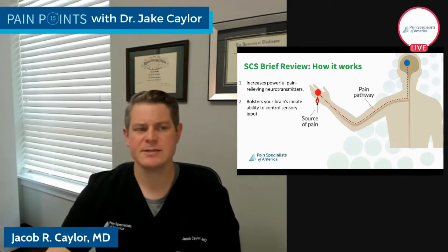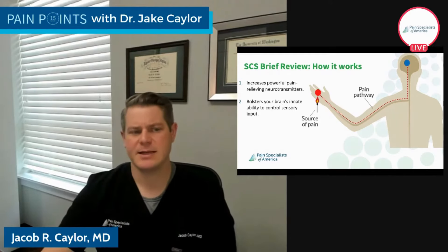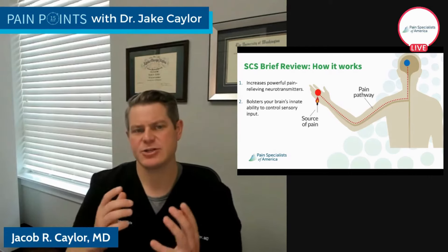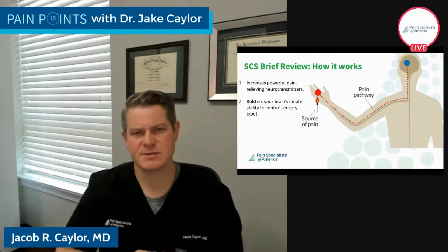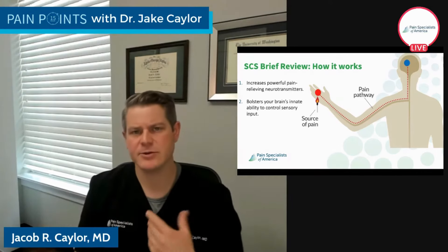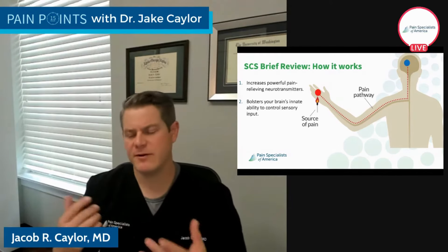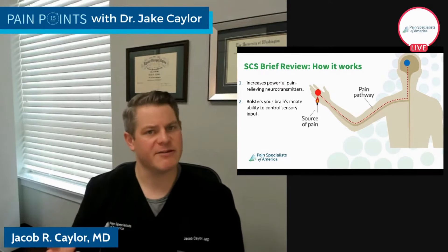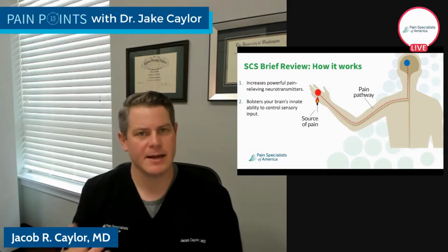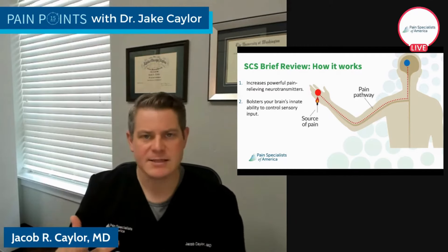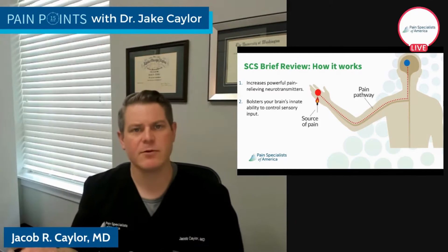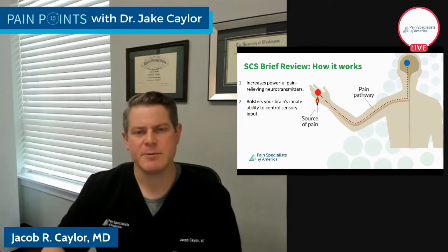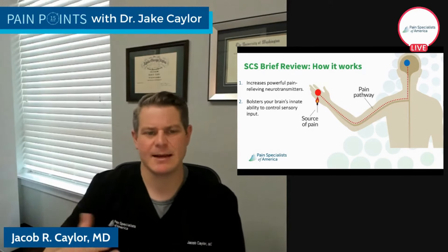We see this because the brain is actually able to control the sensation that it receives. I use this example with my patients: if you weren't thinking about your left pinky toe right now, and now all of a sudden you are — that's an example of your brain's ability to filter out all of this other information. We call that the descending pathways, and that's the second way it works.